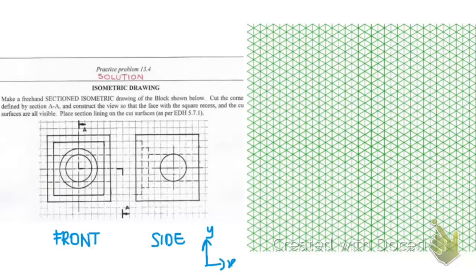So you can start dimensioning the boxes before we transfer this information onto the isometric grid. You are required to cut the corner at section AA so in order for us to view the face with the square recess and this section surface we will look from this view.